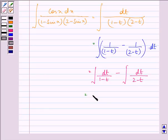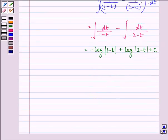We have the answer as minus log mod 1 minus t plus log 2 minus t plus c, which can be written as log 2 minus t upon 1 minus t plus c.